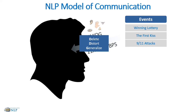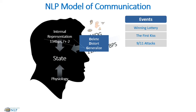So we delete, generalize, and distort the incoming information, and we then form an internal representation. That internal representation is based on one of six things we can do in our head: we create pictures, sounds, feelings, tastes, smells, and of course self-talk.